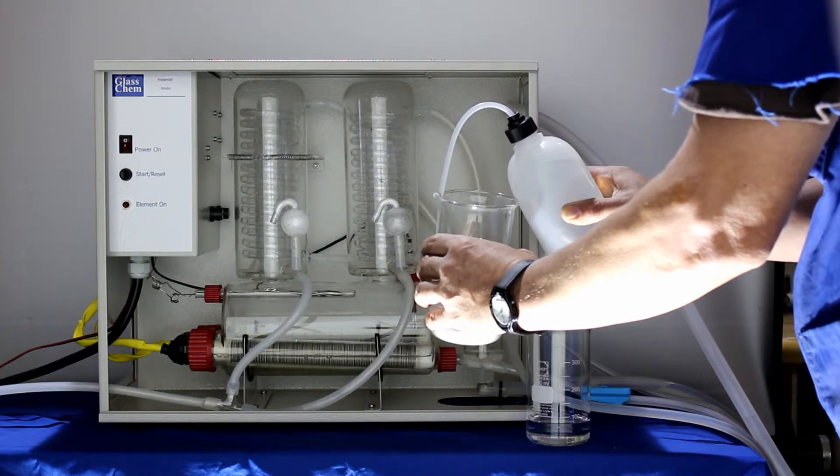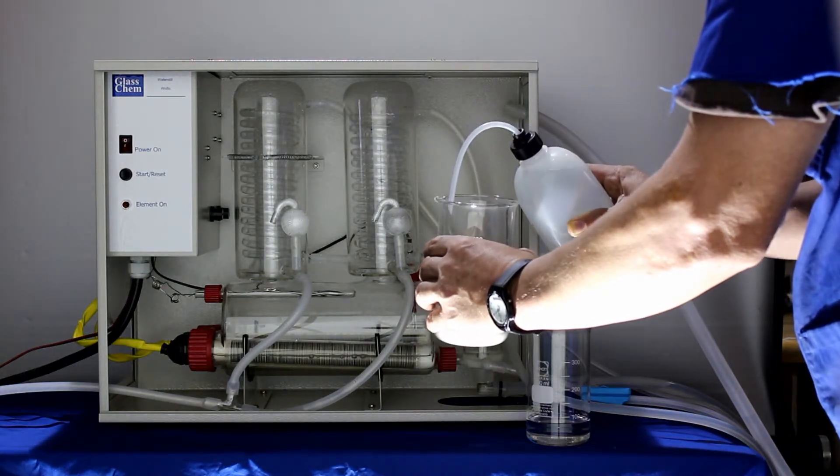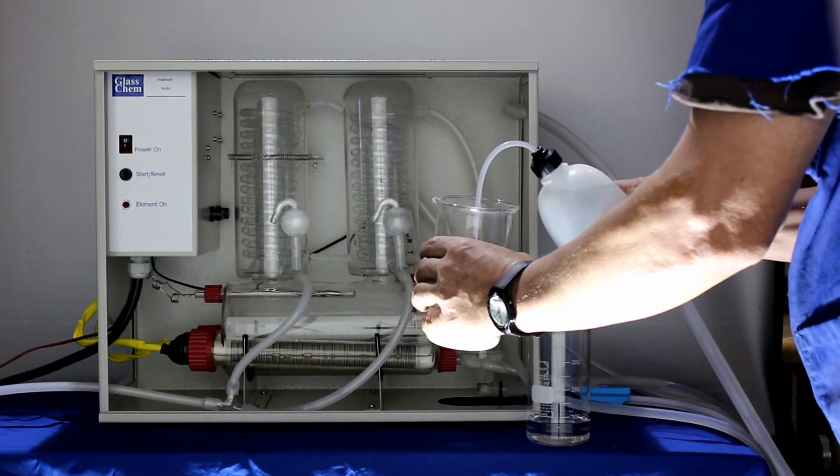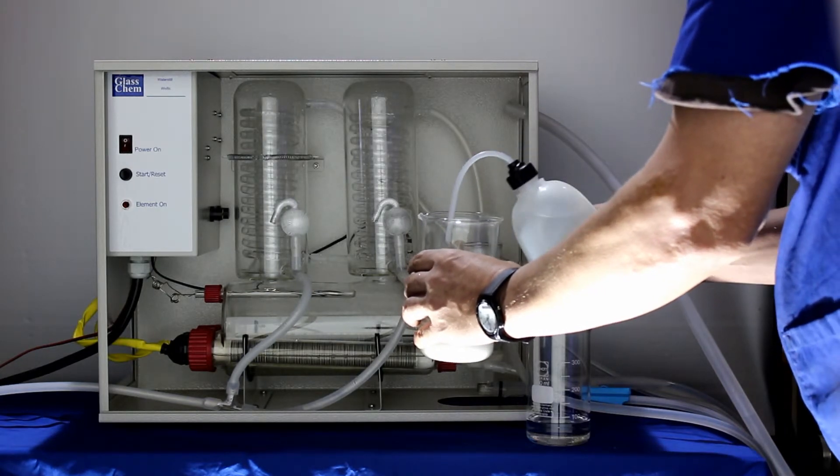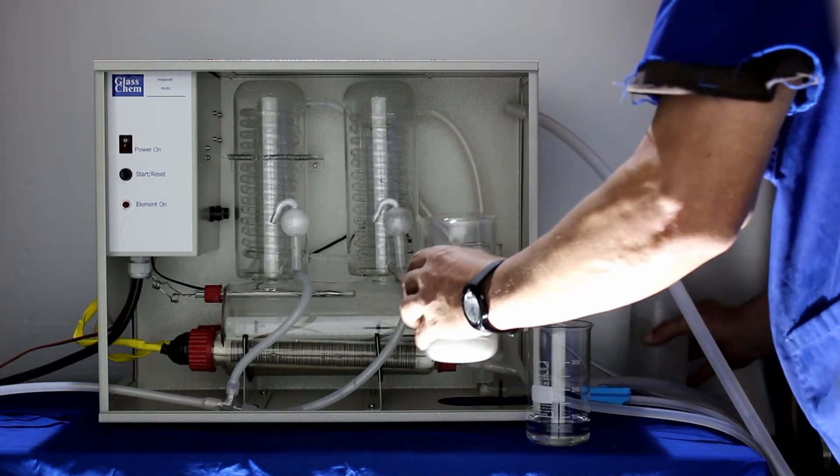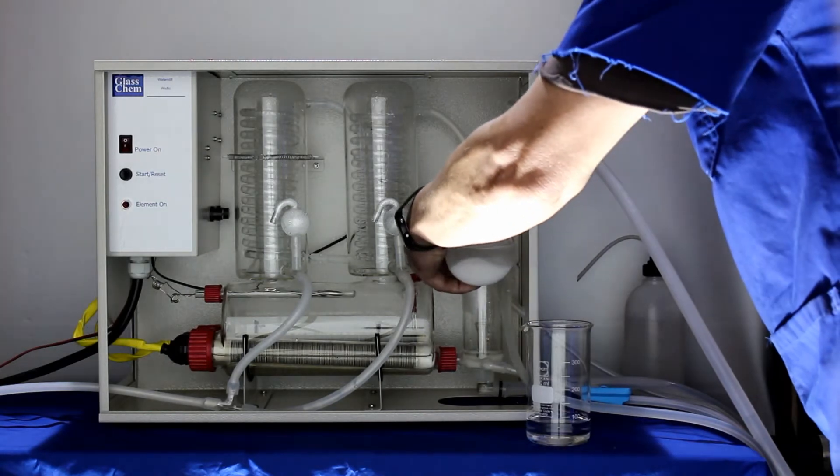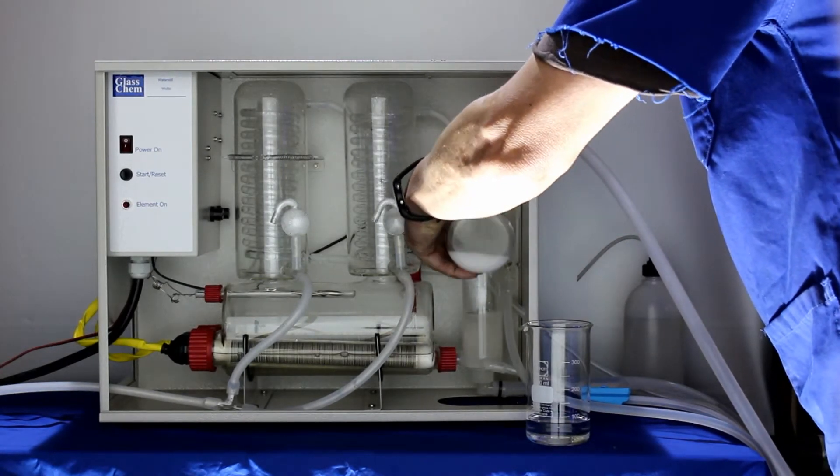Open the water supply valve and add water to the boiler. The water will rise up into the constant level device. Just make sure it does not drop out of the side. Add enough water to reach all the dirty areas inside the boiler.